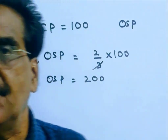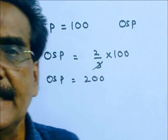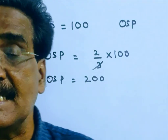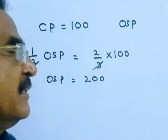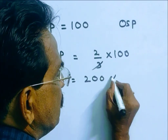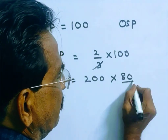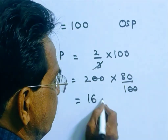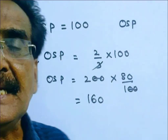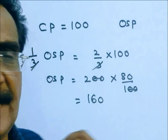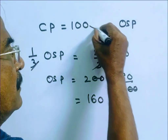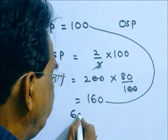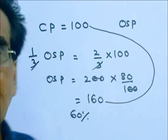The question is: if it is sold at 80% of the original selling price, what is the profit percent? 80% of the original selling price of 200 is 160. Cost price is 100, selling price is 160, so the profit percent is 60%.